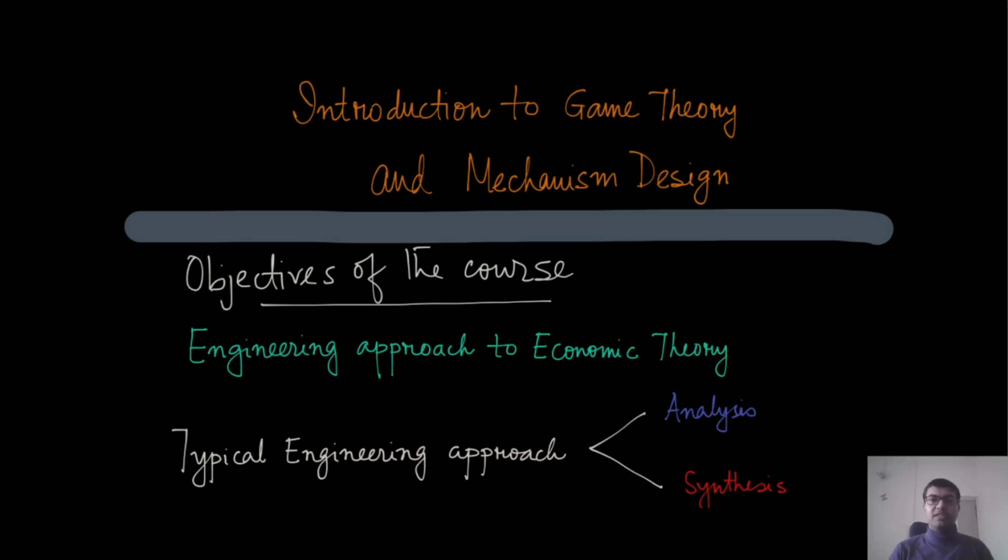Eric Maskin defines mechanism design as an engineering approach to economic theory. Eric Maskin is one of the recipients of the 2007 Nobel Prize in economic theory for his contributions to mechanism design, and quite naturally, mechanism design is indeed an engineering approach.